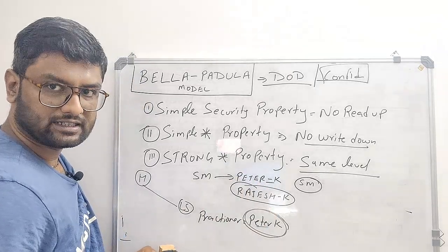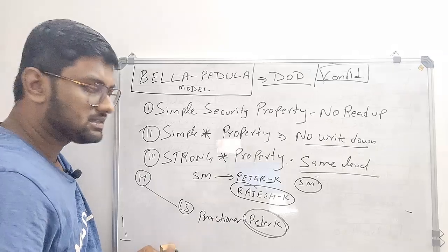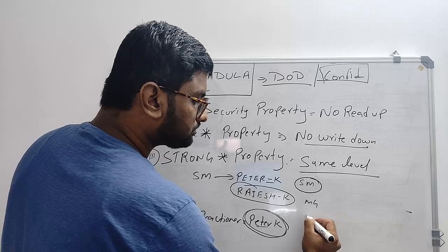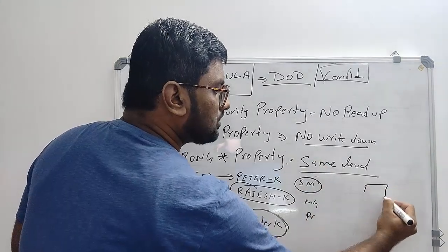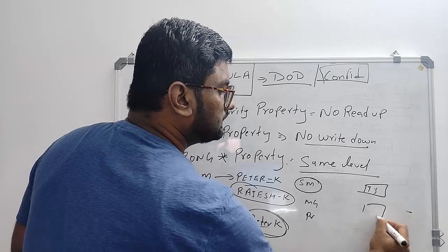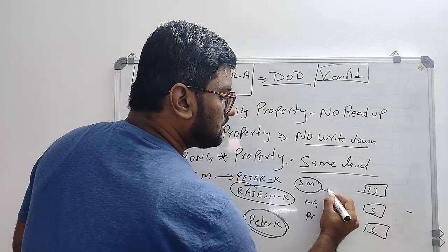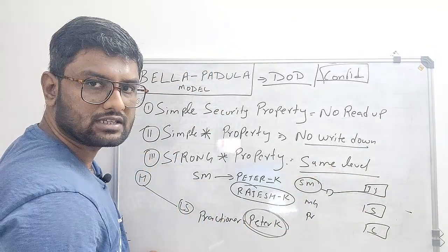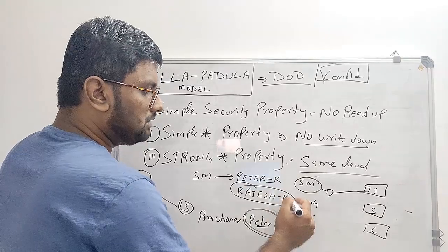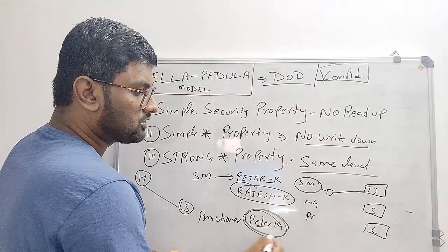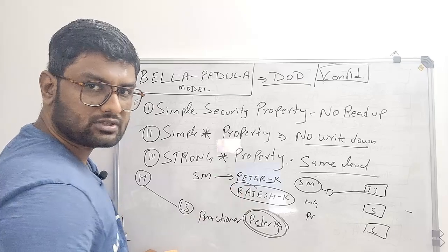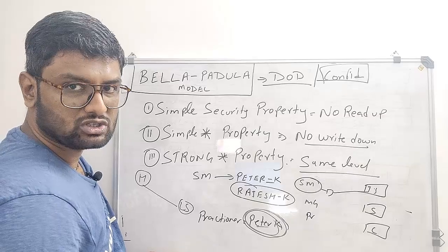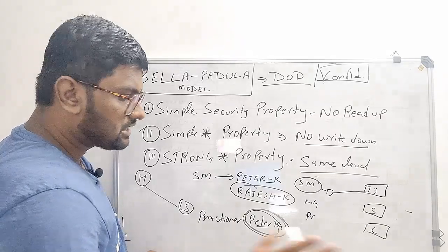We don't need to depend on human error. The email server applies data classification label policies based on the Bell-LaPadula model. So even if Rajesh accidentally adds the wrong Peter K, the mail server detects this via the Star Property rule and will not process the data to the lower-classified subject. Accessing that email would mean gaining access to confidential data for one person and constitutes a disclosure for the organization. That's how information is protected from unauthorized users.